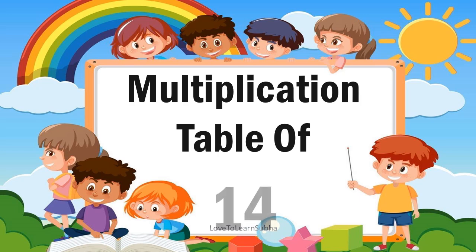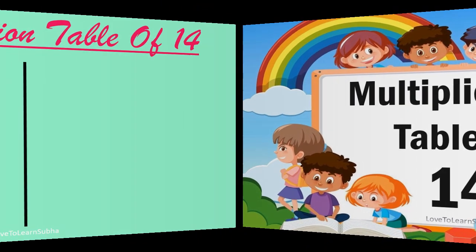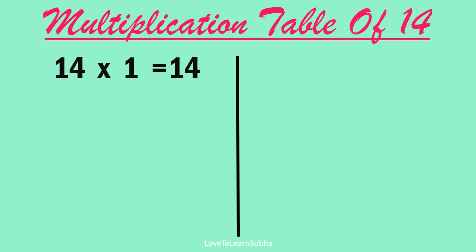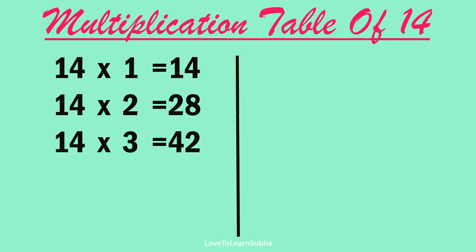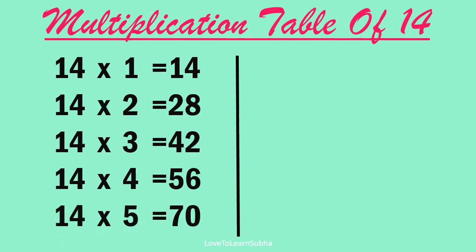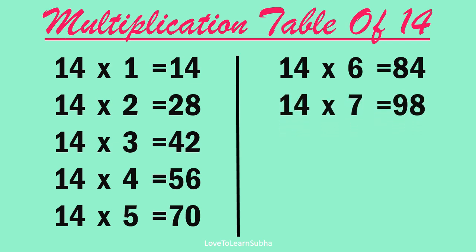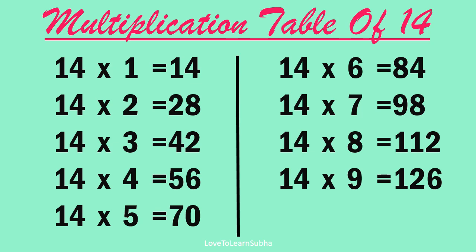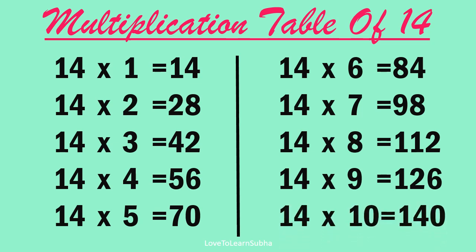Multiplication table of 14. 14 1s are 14, 14 2s are 28, 14 3s are 42, 14 4s are 56, 14 5s are 70, 14 6s are 84, 14 7s are 98, 14 8s are 112, 14 9s are 126, 14 10s are 140.